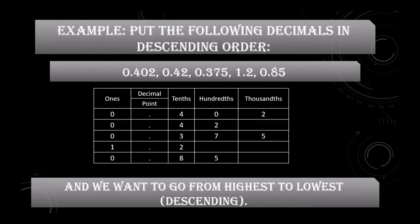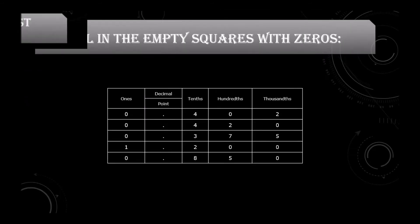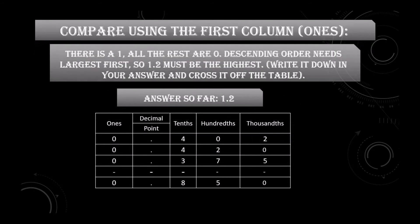We want the highest to the lowest because we are finding descending order. Fill in the empty squares with zero. Now compare using the ones column — there is a one, and all the rest are zero. Descending order needs the largest first, so 1.2 must be the biggest.